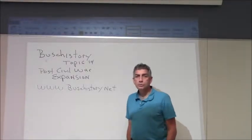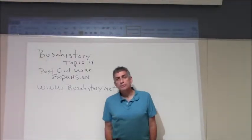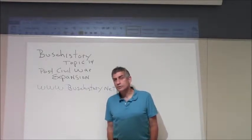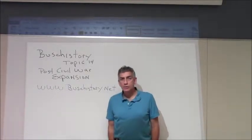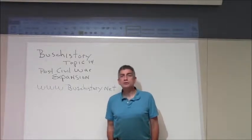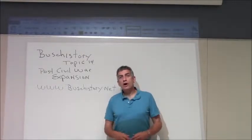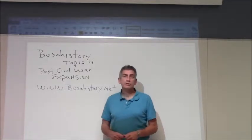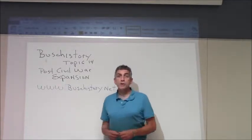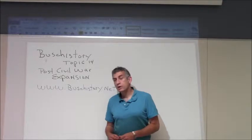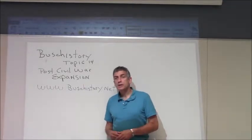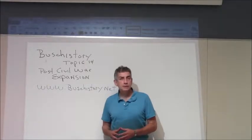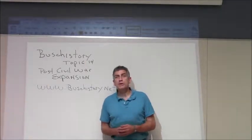Hi there, welcome back to Bush History. We've taken a brief vacation for the holidays. It is January now and we are starting up the spring presentations. So far we have gone through the causes of the Civil War, the causes of the American Revolution, early expansion as we moved across the continent. This topic, topic 14, is based on chapter 18 of Faragher's Out of Many — you can use any textbook you like, but that's my guidebook.